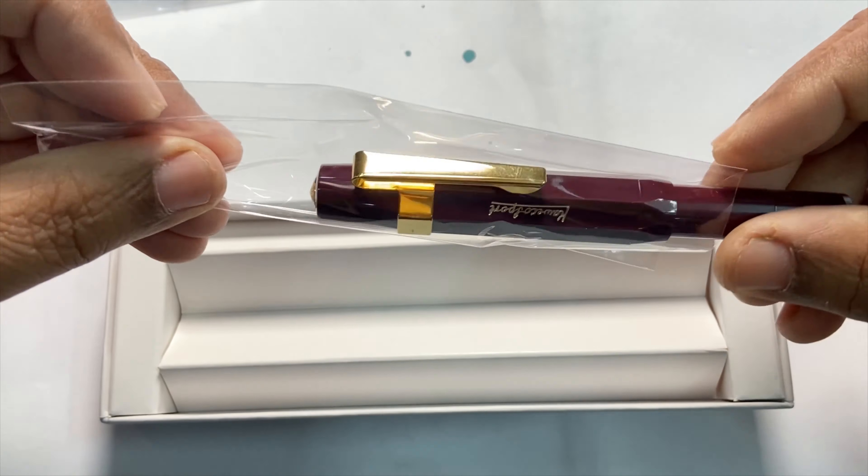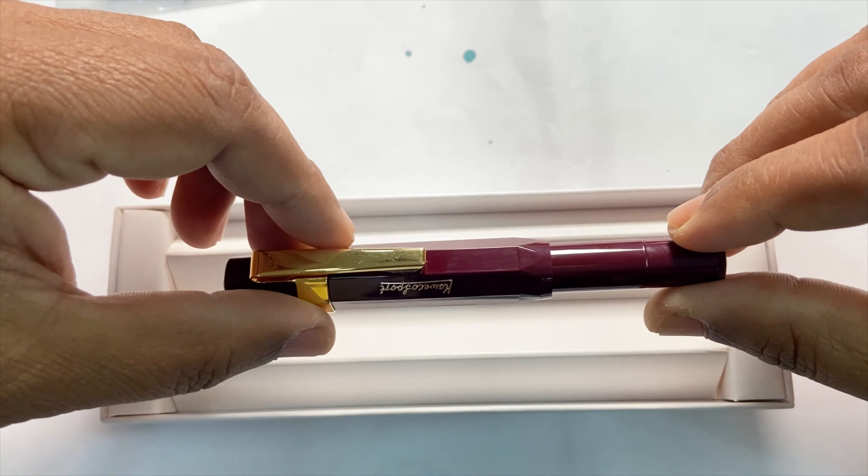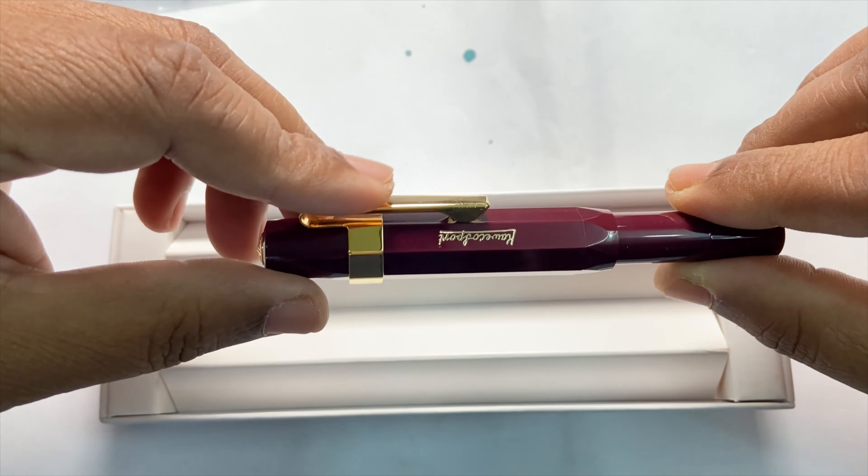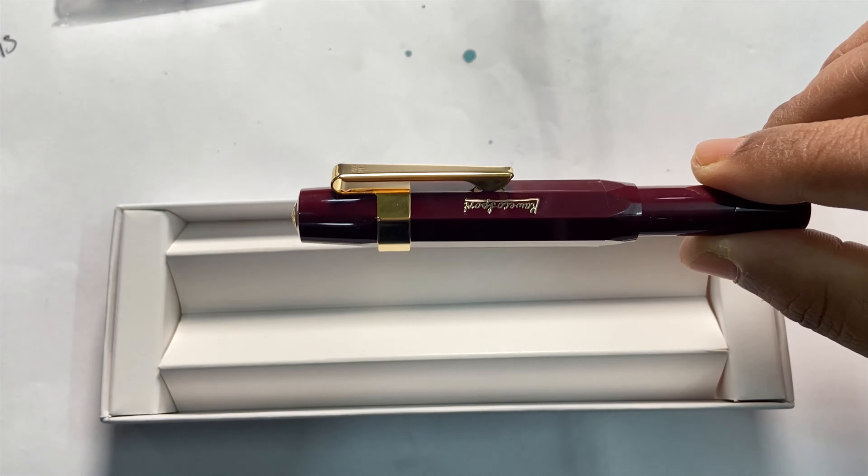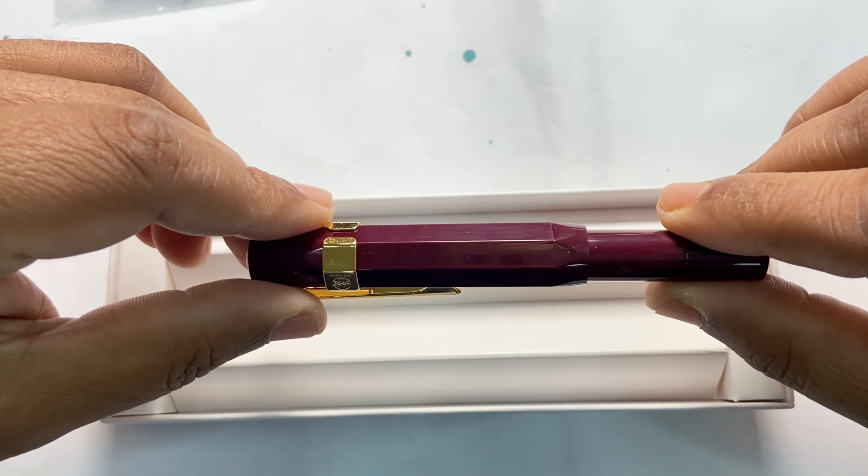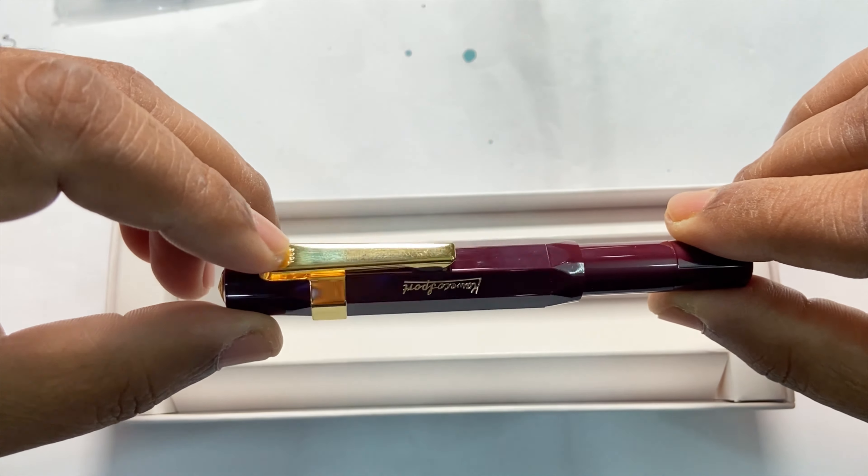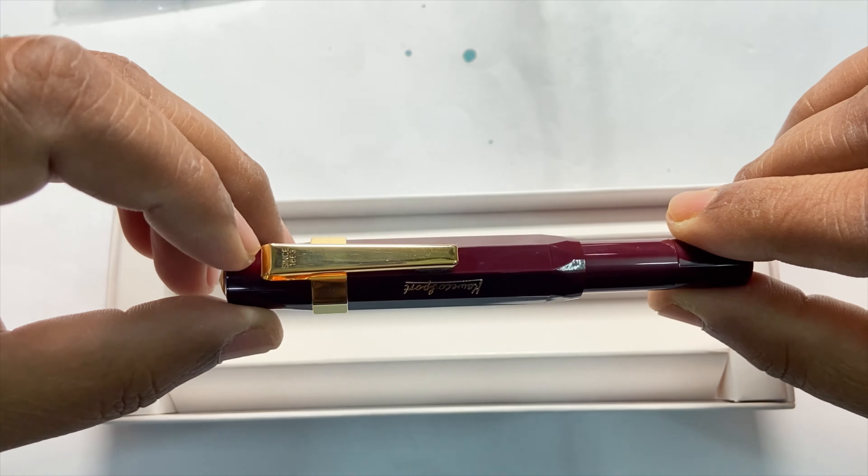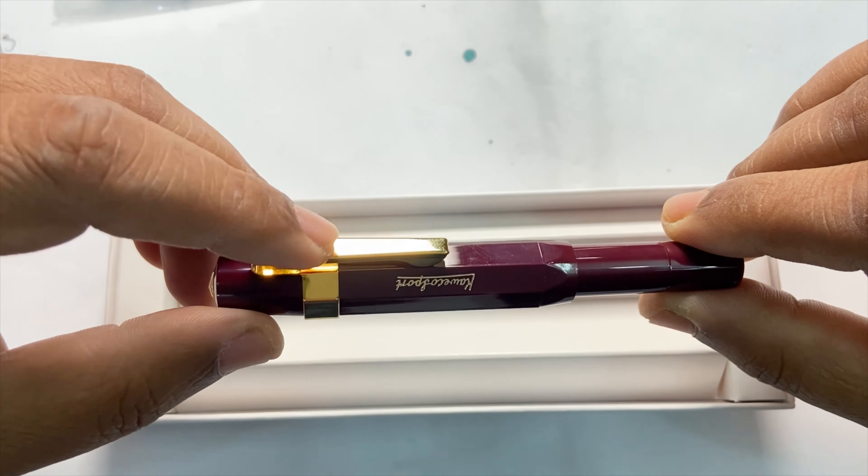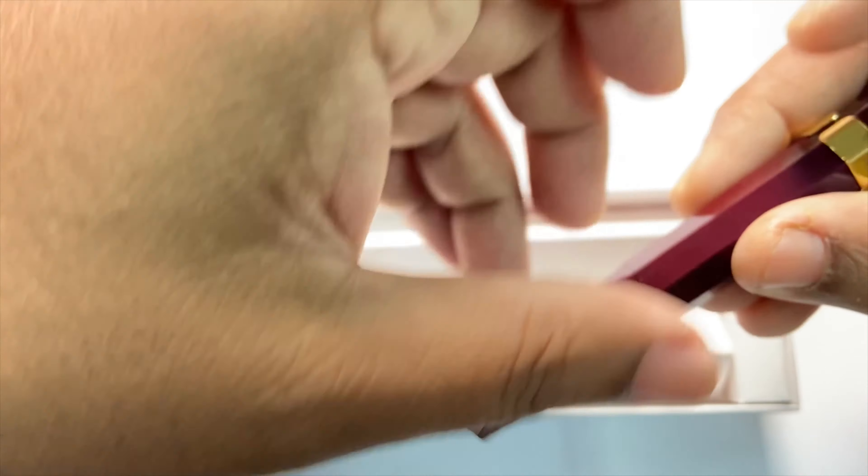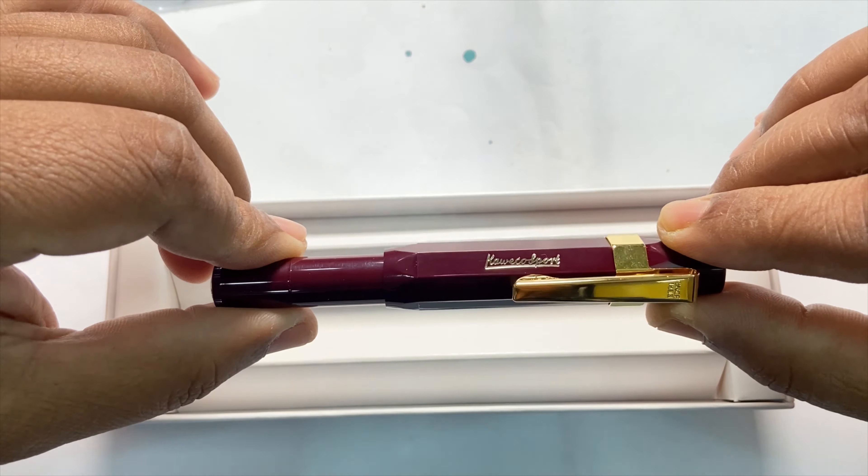Friends, those of you who may know about Kaweco—Kaweco usually sells their pens without clips, and I had opted for the clip as an option for the simple reason that I occasionally need to carry these pens in my pocket. These clips are available in two versions: one is the gold-colored version, and the other is chrome or steel-colored. I had opted for the gold-colored one because it goes well aesthetically with this black plastic body.